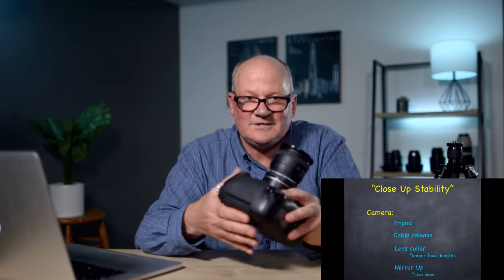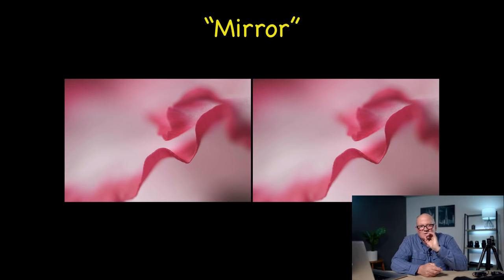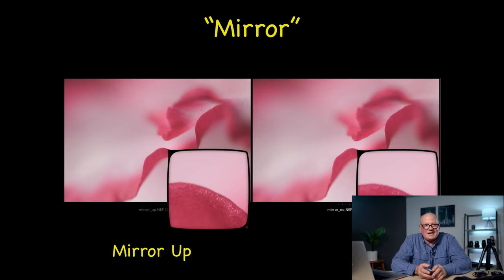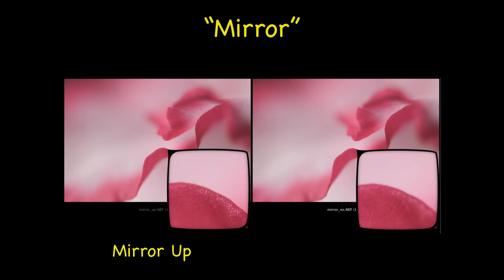Live view is a wonderful feature on the camera. Here's an example of two shots — looking at them closely at 100%, right on the edge of a little petal, with mirror lockup the left image is just a little bit sharper than the right. That's because the mirror lockup feature was used, so make sure you use that every time if you're not in live view and you'll get sharper pictures.